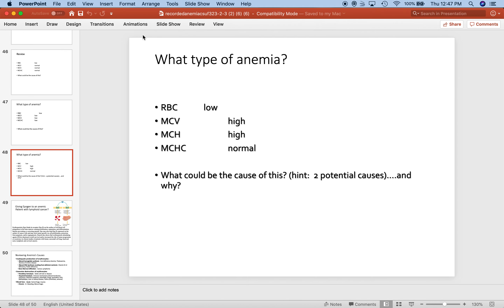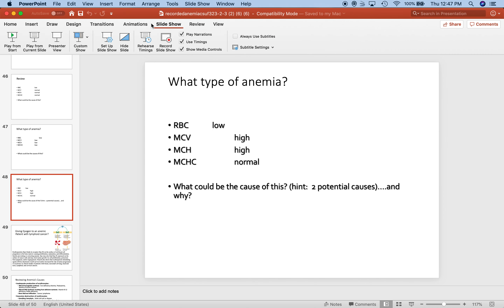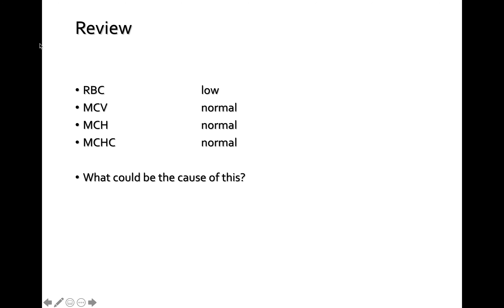Back to the different types of anemia. Reviewing here: we've got a normal mean cell volume, a normal mean cell hemoglobin, and a normal mean cell hemoglobin concentration.